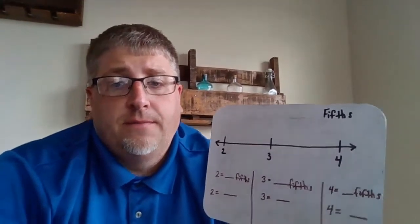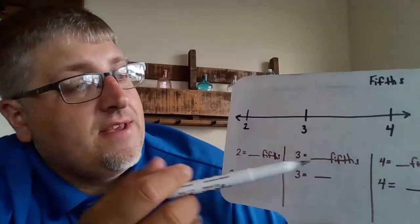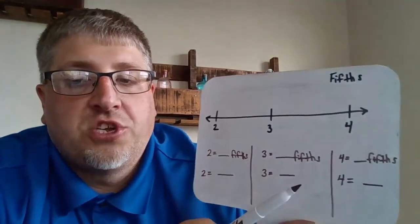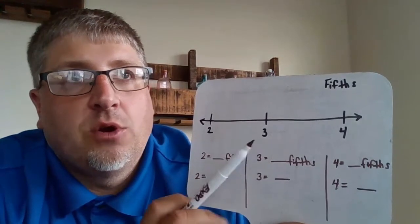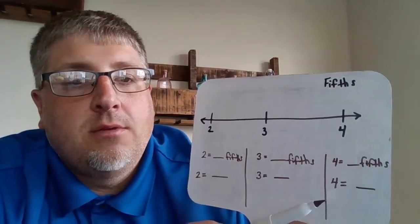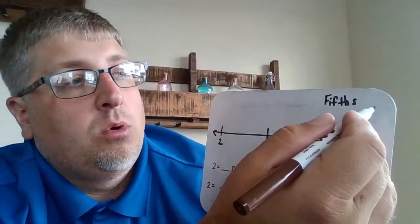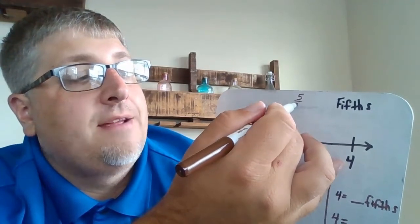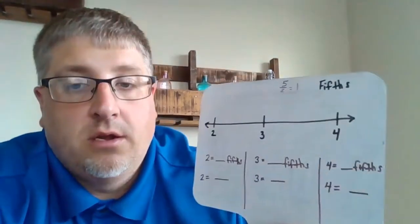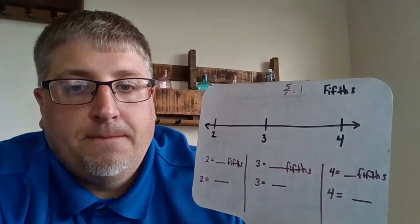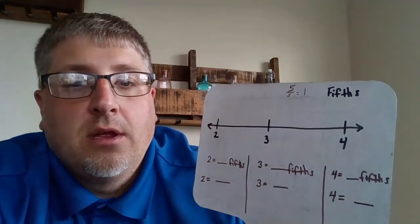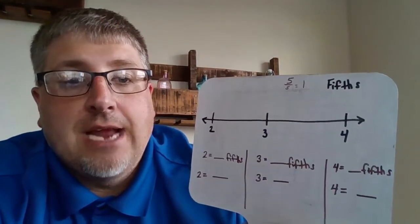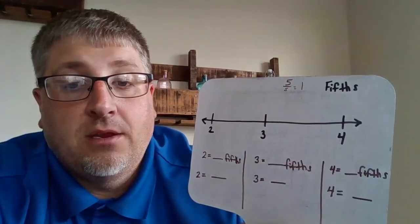Let's break down fifths here. And what I want you to notice about fifths is this. We're starting at two. We're starting at two. So that's going to be different. So zero to one. Remember, if we went from zero to one, we're in fifths. So 5/5 is going to equal one.